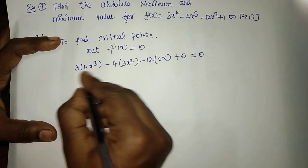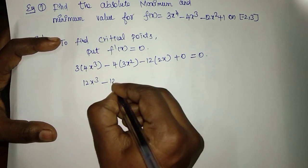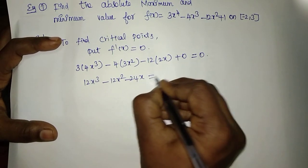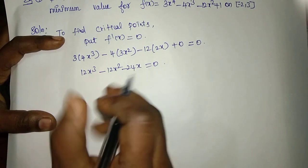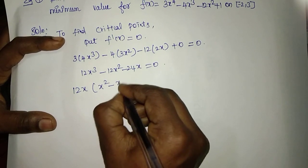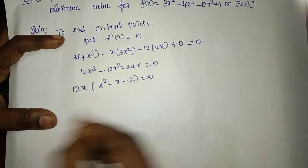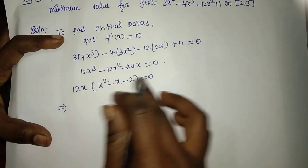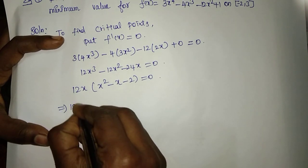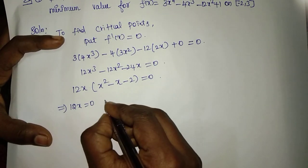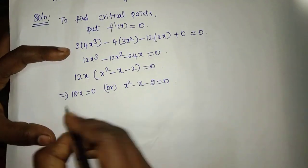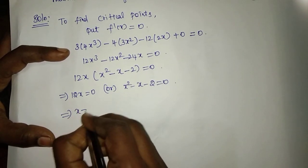Differentiating F of X, we get: 3 times 4 gives 12x cubed, minus 4 times 3 gives 12x squared, minus 12 times 2 gives 24x, equal to 0. Taking 12x as the common factor: 12x times (x squared minus x minus 2) equals 0. Since the product is 0, either 12x equals 0, giving x equals 0, or x squared minus x minus 2 equals 0.